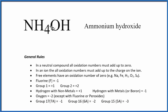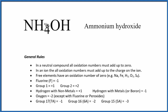In this video, we'll find the oxidation numbers for each element in NH4OH — that's ammonium hydroxide. This compound is neutral; there's no plus or minus after it, so it's a neutral compound.